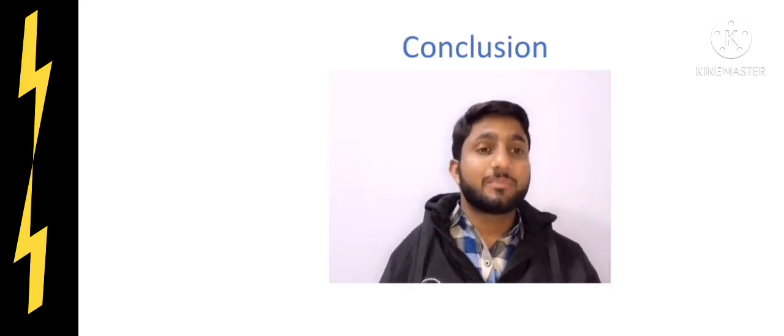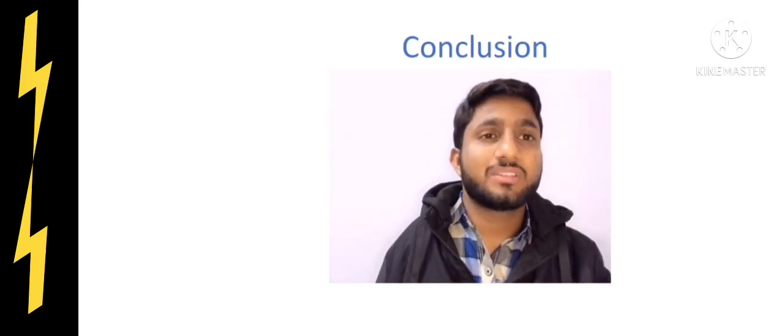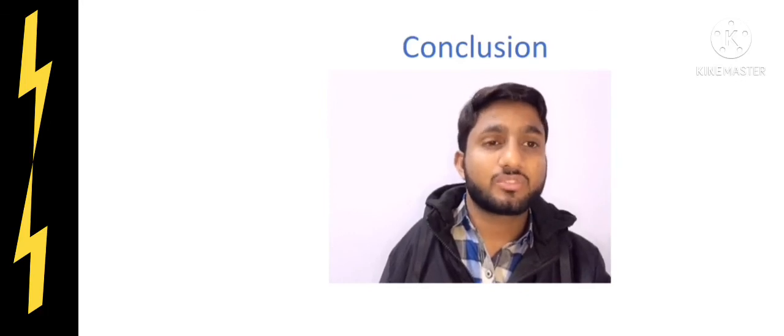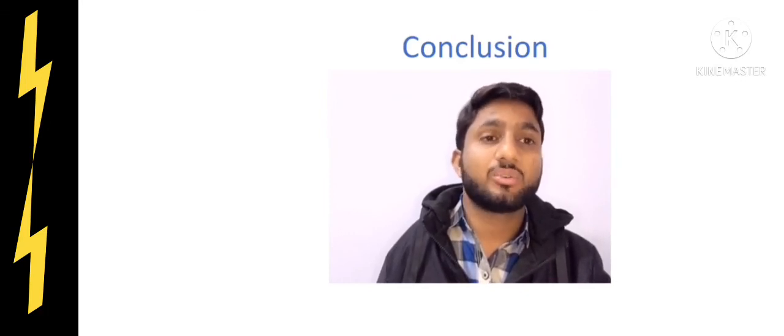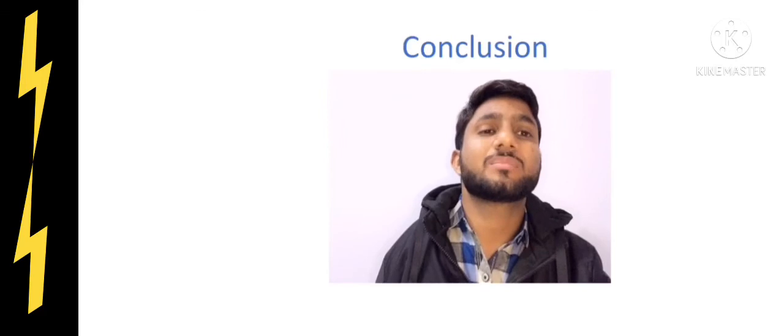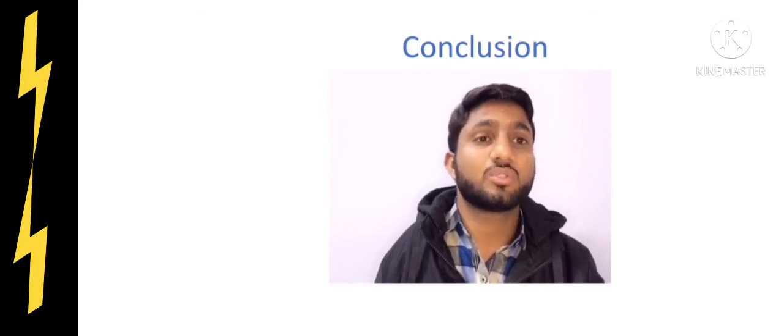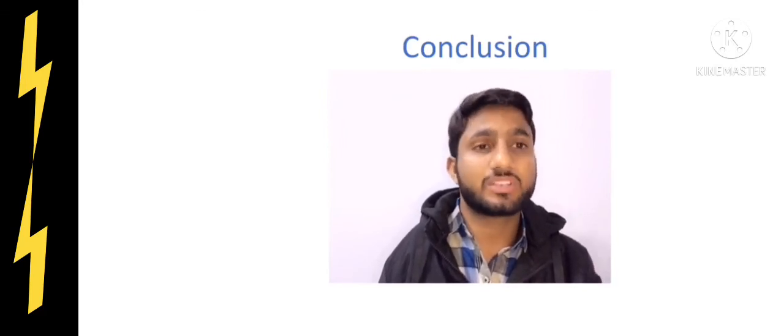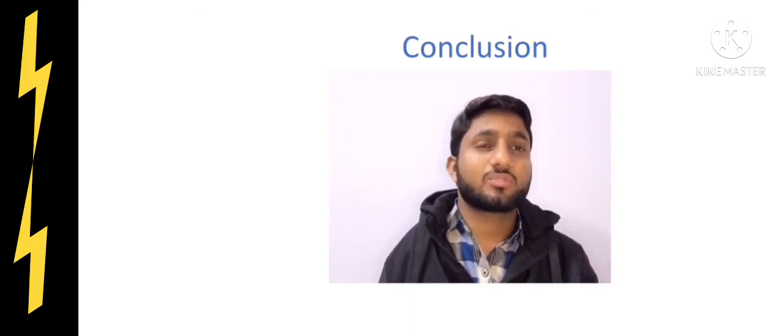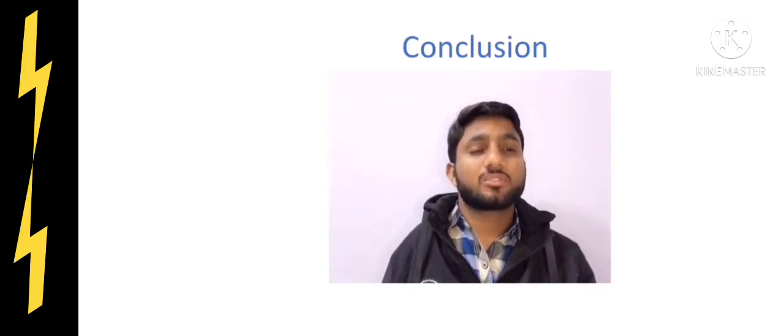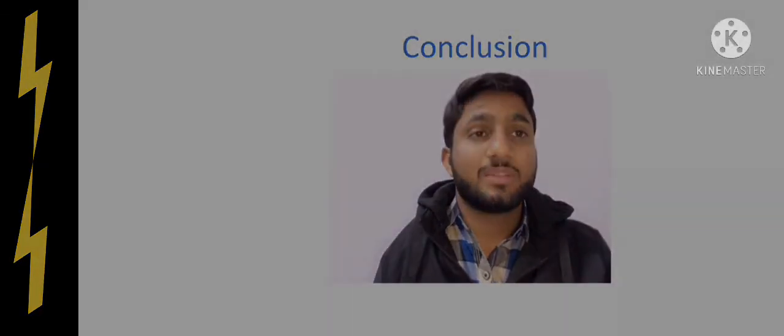In general, if I sum up what are Barr bodies, they are actually formed due to inactivation of X chromosome in females, and this is the benefit of Barr bodies. When one X chromosome is inactivated, the genes are expressed in a regulated way on only one X chromosome. The rest of the X chromosome will become inactive. Thanks a lot. If you have any questions, let me know. Stay blessed. Assalamu alaikum.